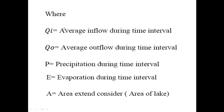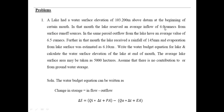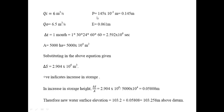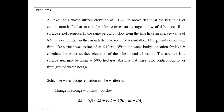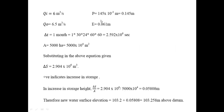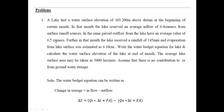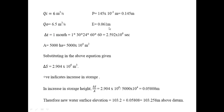Substituting values: qi, the average inflow, is 6 cubic meters per second. The rainfall received during that month is 145 mm, which equals 0.145 meters. q0, the average outflow, is 6.5 cubic meters per second. E, the evaporation from the lake, is 6.1 mm which equals 0.061 meters.